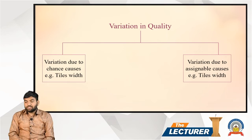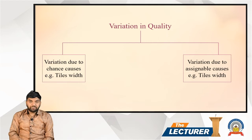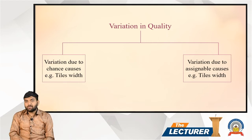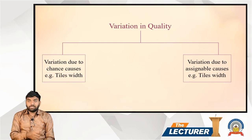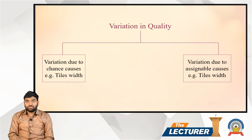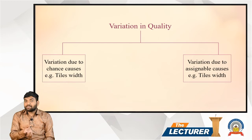Variation due to assignable causes is larger and more significant. For example, instead of 5mm you might get 3mm or 8mm — a very wide deviation. These are assignable causes of variation, meaning a specific reason can be identified, such as a machine fault, a worker error, or a raw material defect.